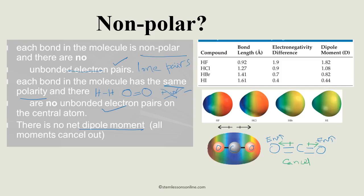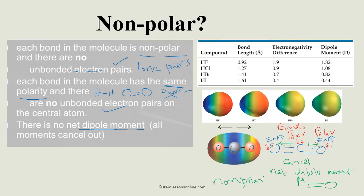When the dipoles cancel, the net dipole moment — represented by the symbol μ — equals zero. Therefore, CO₂ is nonpolar. Even though each individual C=O bond is polar, because the electronegativity difference between carbon and oxygen gives oxygen a slight negative charge and carbon a slight positive charge, the net dipole moment is zero, making the molecule nonpolar overall.